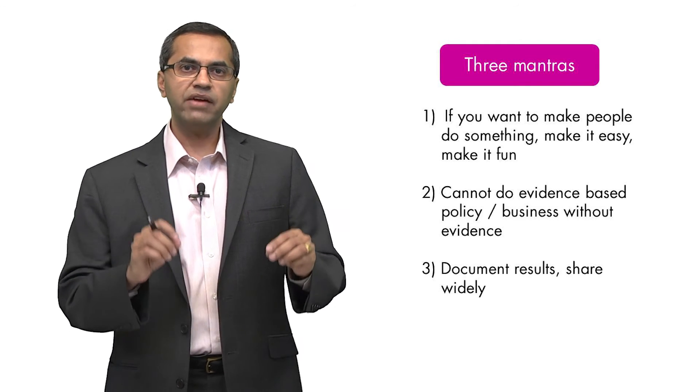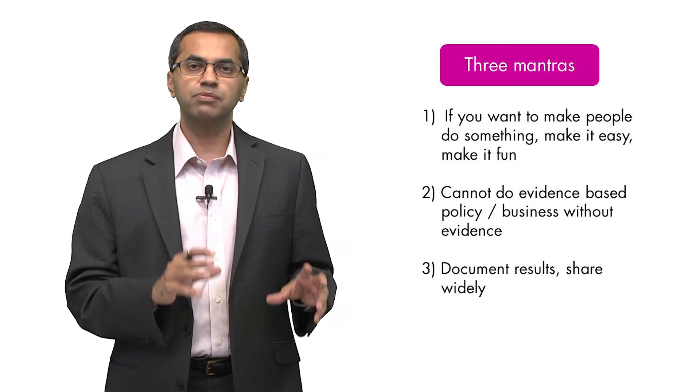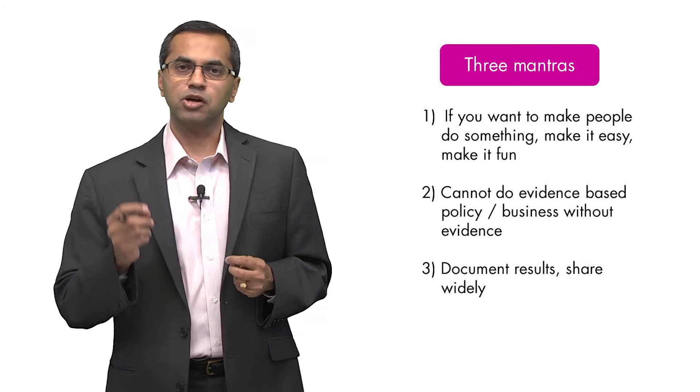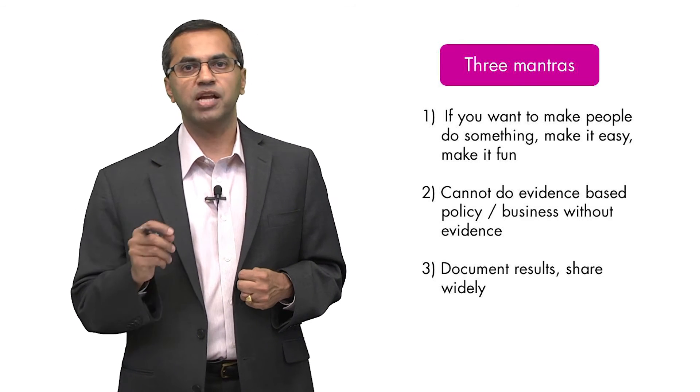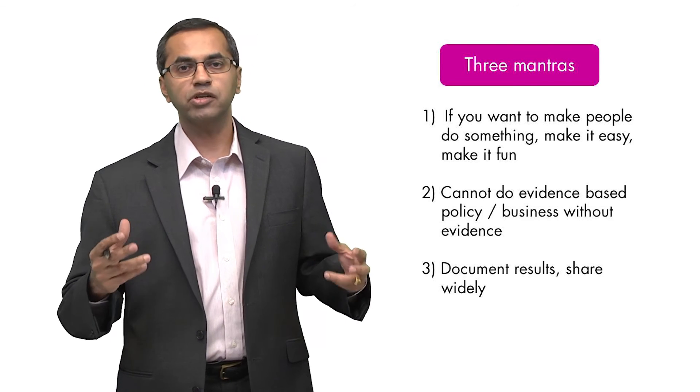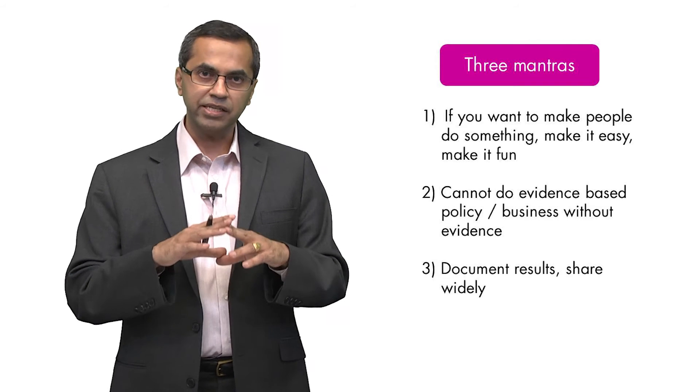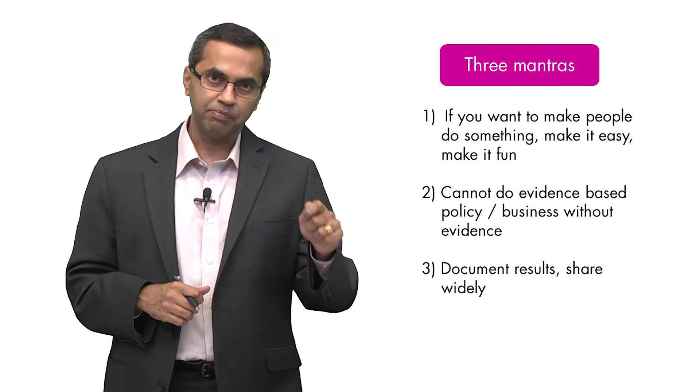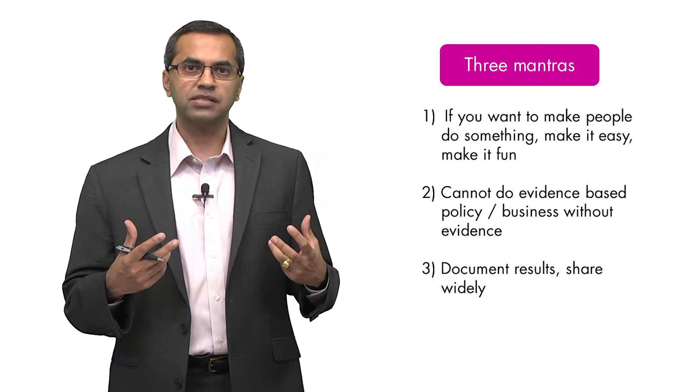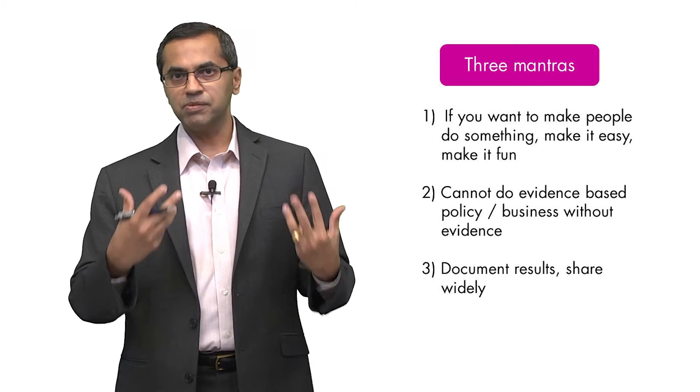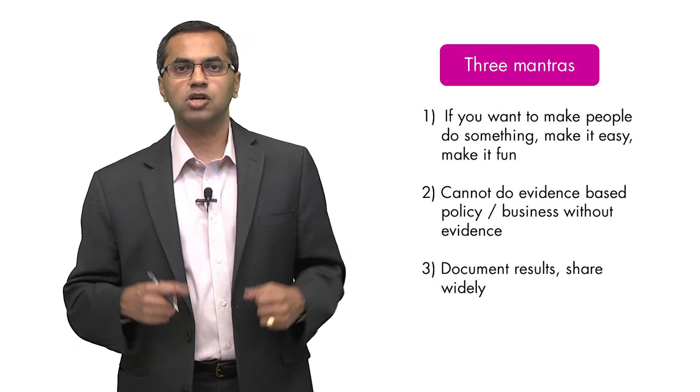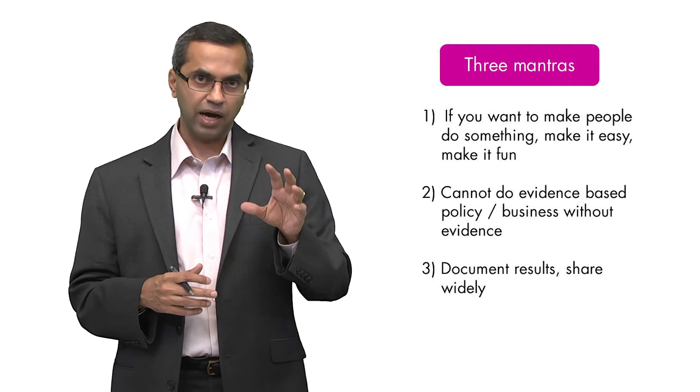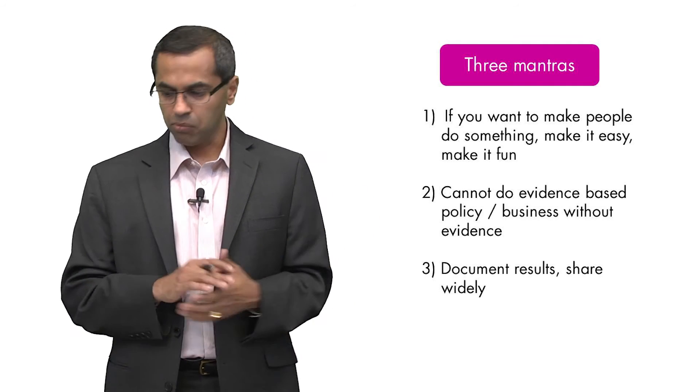Mantra number two: you cannot do evidence-based policy or evidence-based business without evidence. It is important to experiment, and not just experiment once, but experiment all the time. Remember we talked about triangulation, the idea that you can collect evidence from different kinds of subject populations, different dependent measures, and different contexts, and if the multiple experiments that you run can all converge towards a common conclusion, you now have solid evidence on which you can base either your business practice or policy.